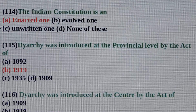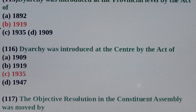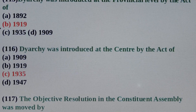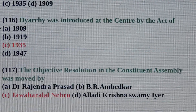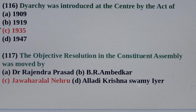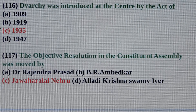Question No. 115: Dyarchy was introduced at the provincial level by the Act of? Answer is Option B: 1919. Question No. 116: Dyarchy was introduced at the centre by the Act of? Answer is Option C: 1935. Question No. 117: The objective resolution in the constituent assembly was moved by? Answer is Option C: Jawaharlal Nehru.